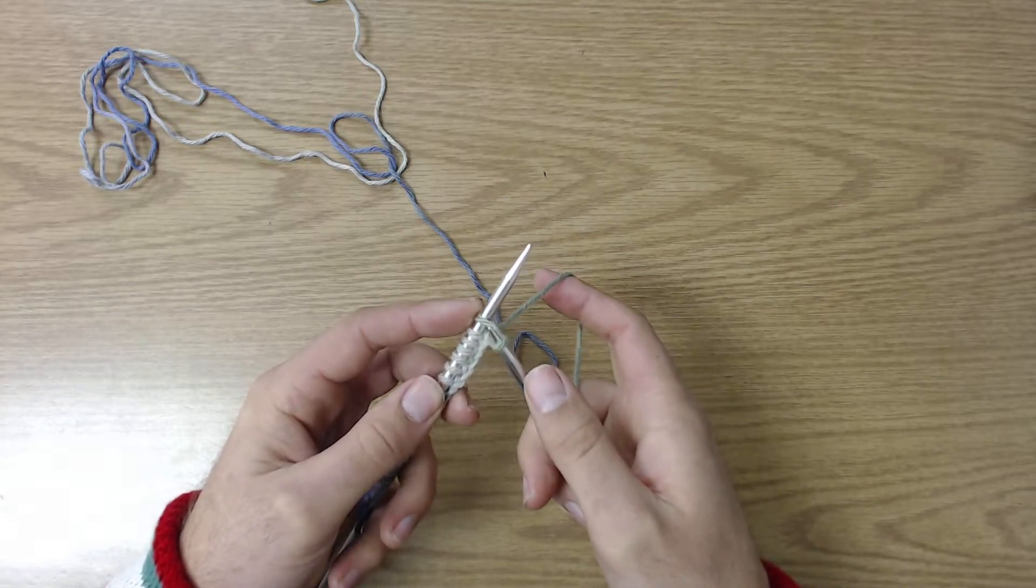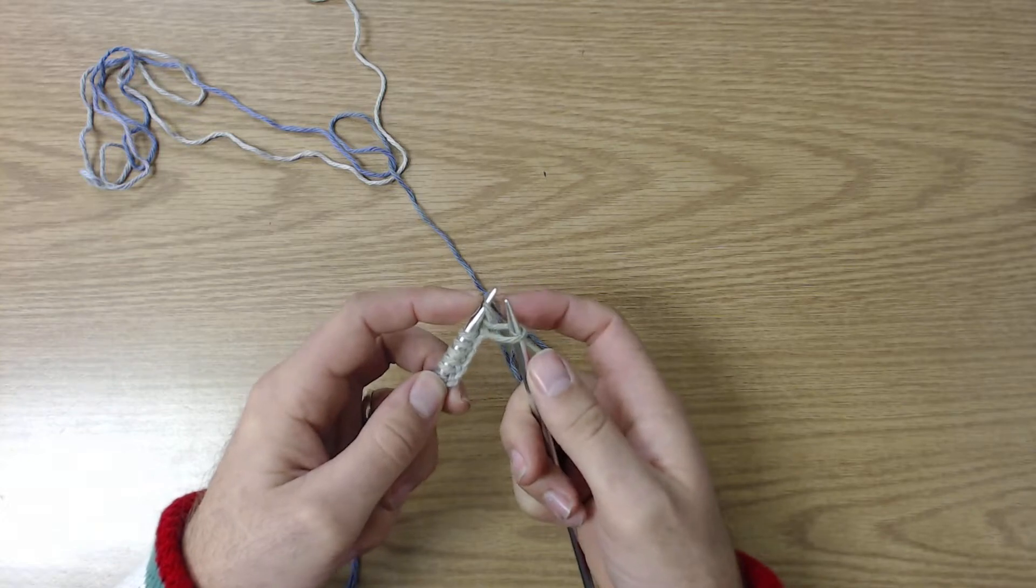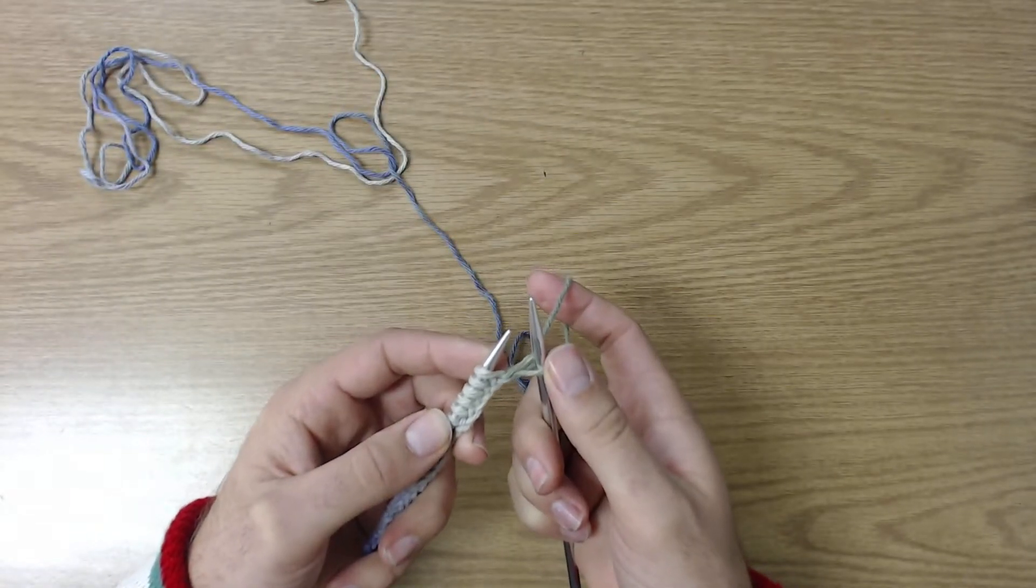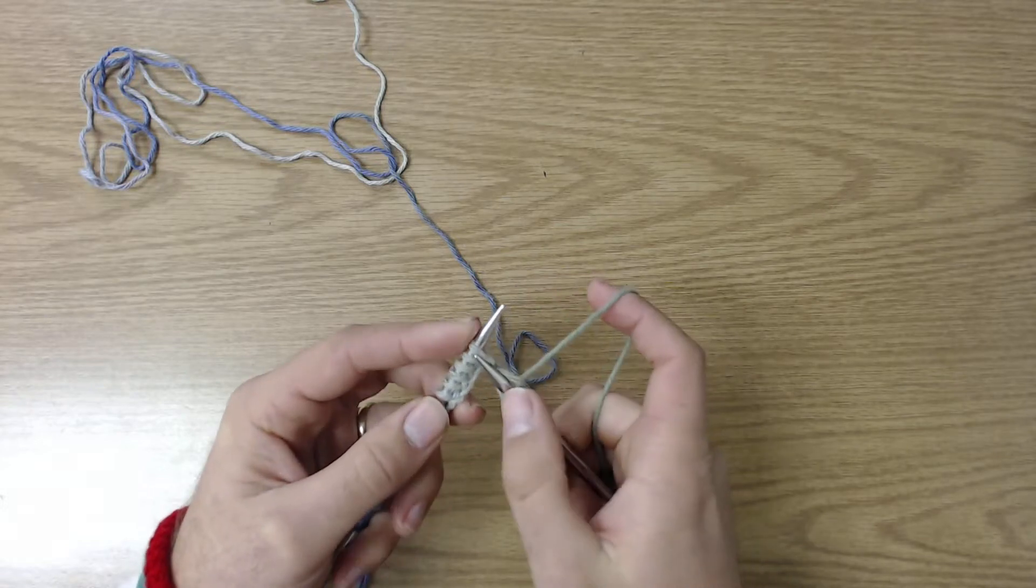That forms a loop. Since we are done casting on, I am now going to take that loop off of my left needle. Now I have one on my right needle. I continue to do that.